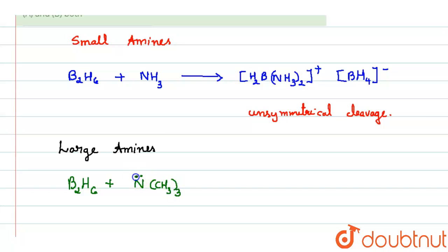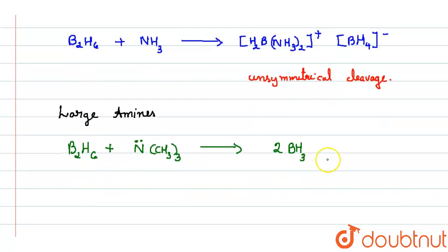So we are going to have a lone pair on nitrogen, isn't it? So we will get 2 units of BH3, it is going to break like 2 units of BH3, monomer borane.